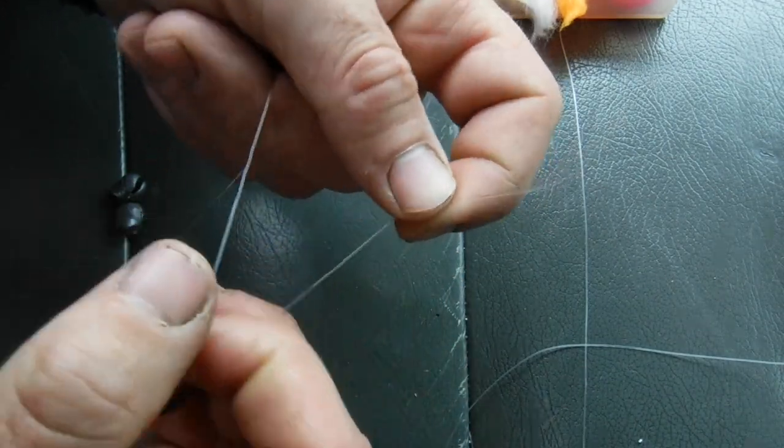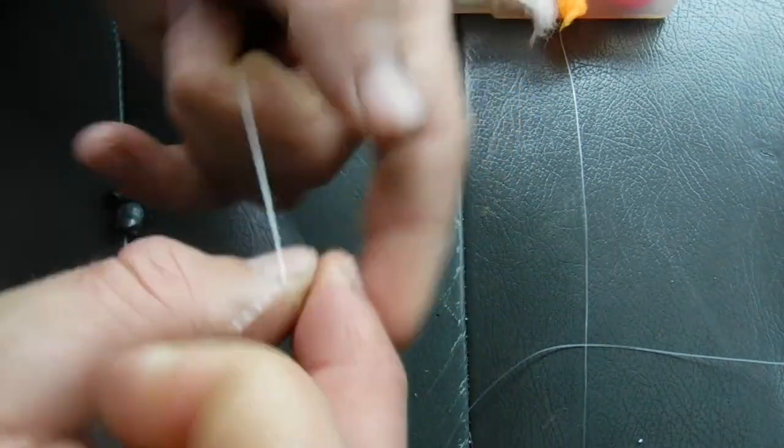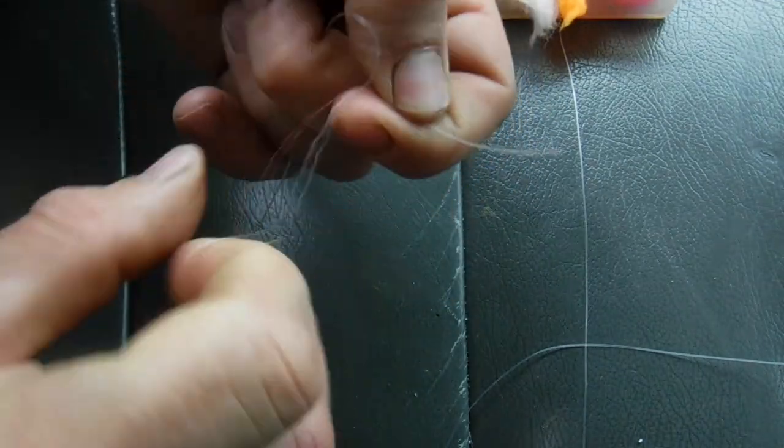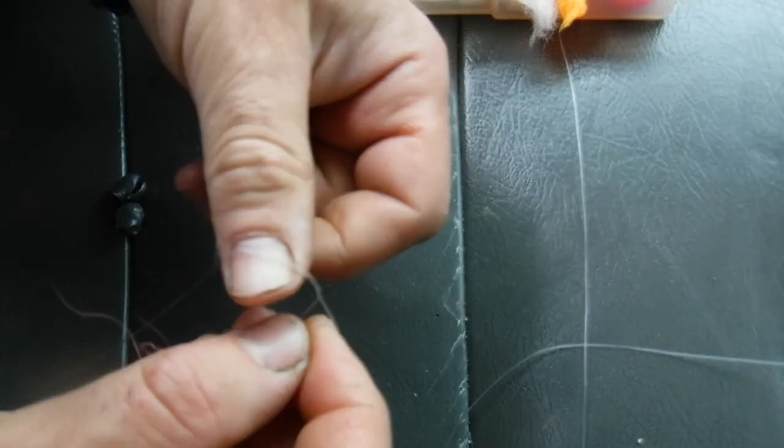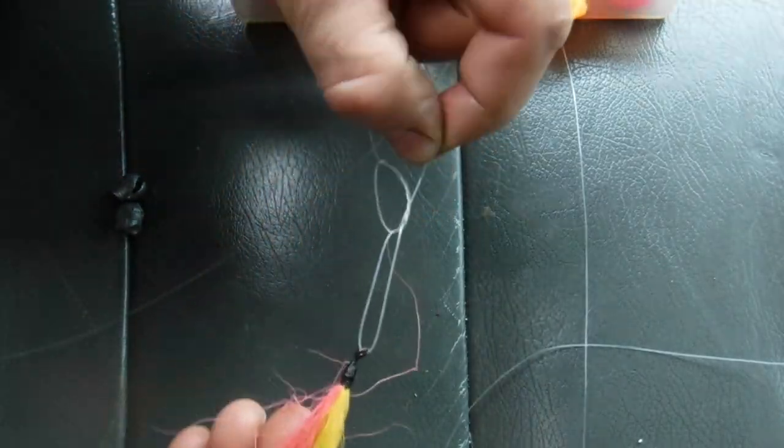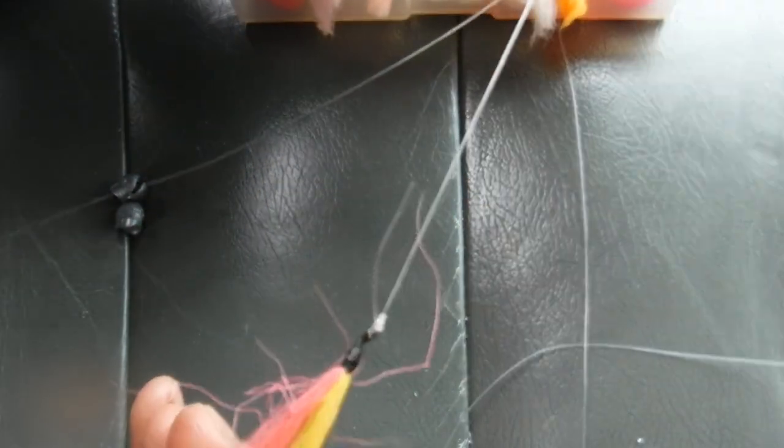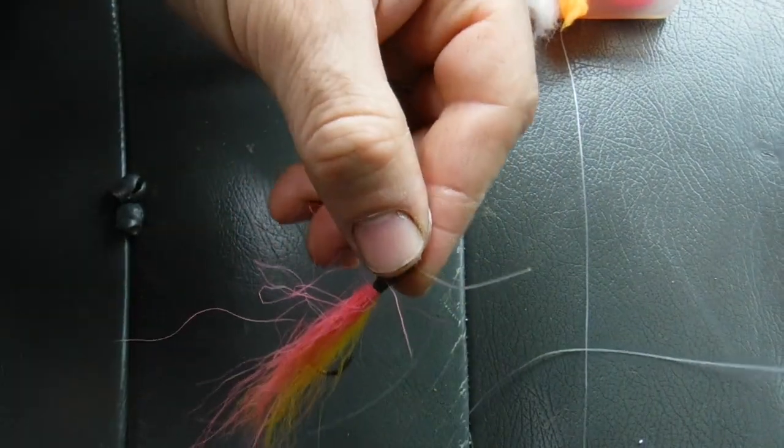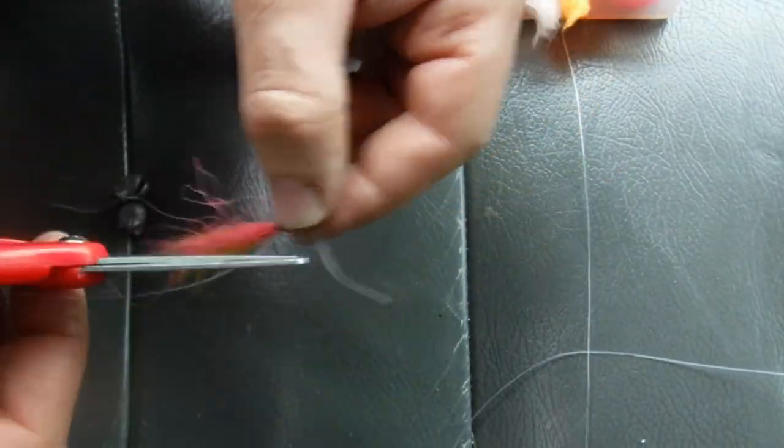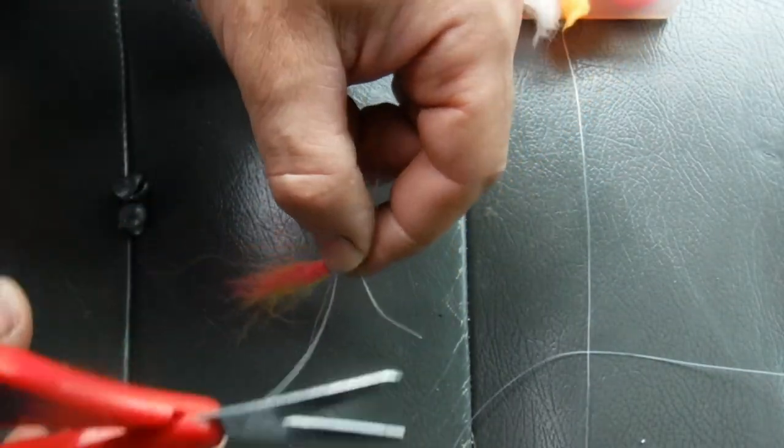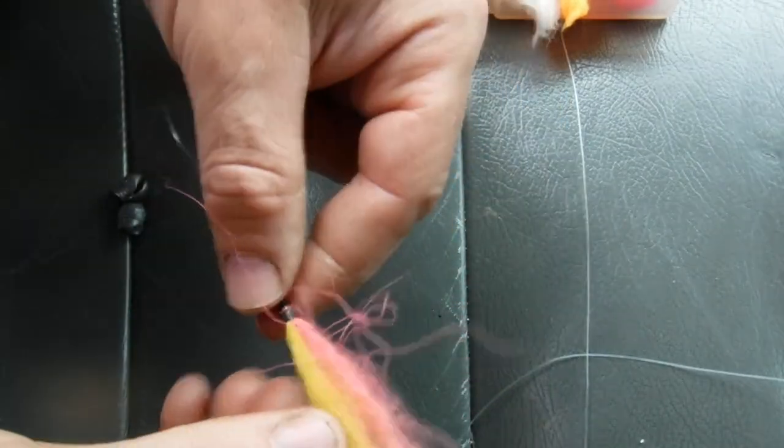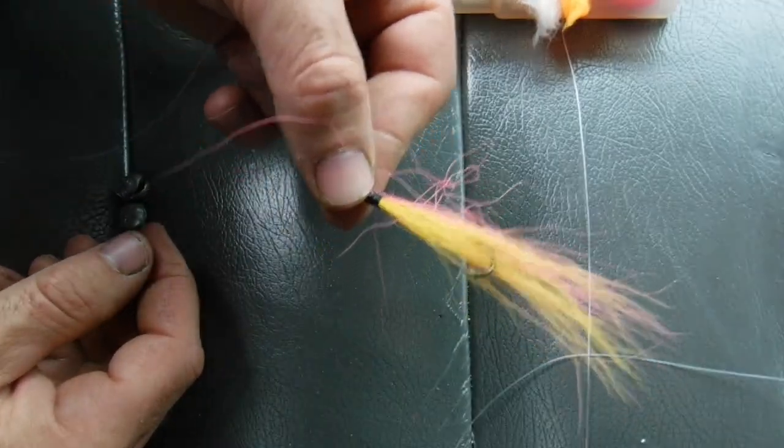So you're going to poke that through and then you can just do that standard knot, whatever you're comfortable with. This is the one I call a fisherman's knot. I don't know if it's called that. I don't think it's a trilene knot. So then you just pull that, cinch it tight. Take your scissors and you'll cut that and then you can just run that through the river.